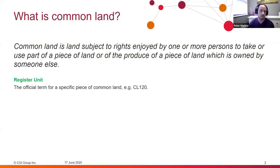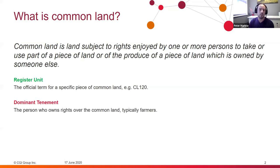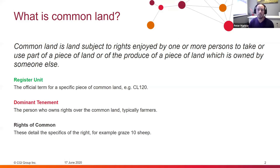The first term is register units. A register unit is the official term for a piece of common land. Within Wales there's lots of common land, and the term for an individual piece is a register unit, which usually has a reference — for example CL120, the unique reference for a piece of common land within Wales. Second is dominant tenements — or DTs — these are the people that own specific rights over common land, and they typically tend to be farmers. Lastly, rights of common detail the specifics of those rights, for example grazing 10 sheep. So in conclusion, dominant tenements have one or more rights of common, and those rights apply to a register unit.